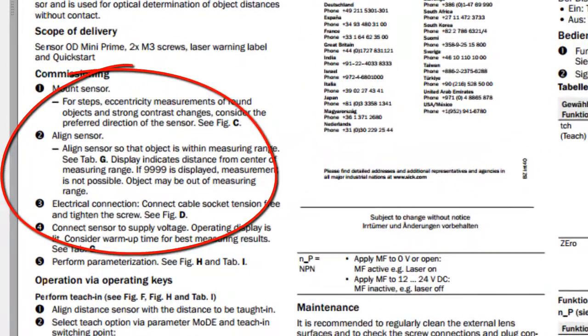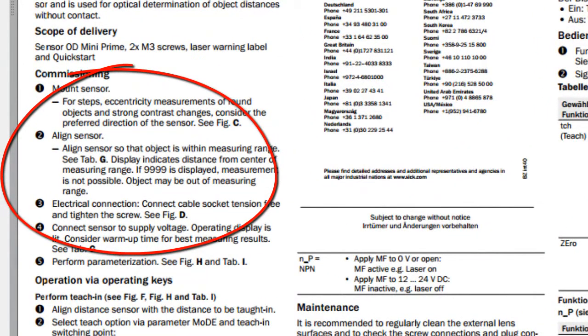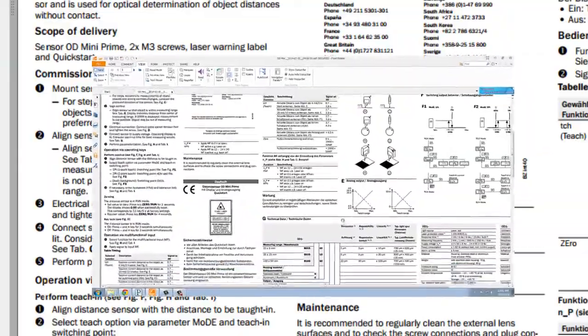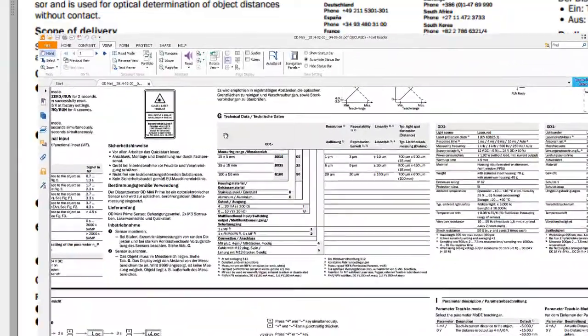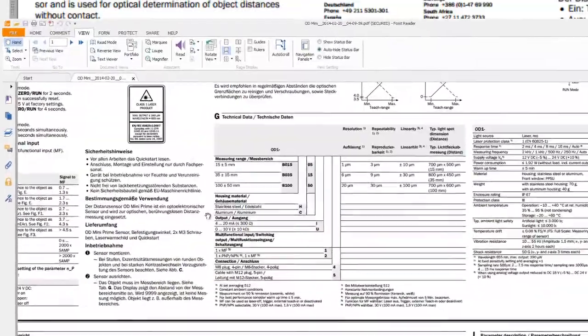We also need to align the sensor to a target that we're going to be measuring. And for that, take a look at the sensor, and it gives a span of the sensor from a minimum and maximum distance. Align it so that the target is somewhere in the middle of that range.